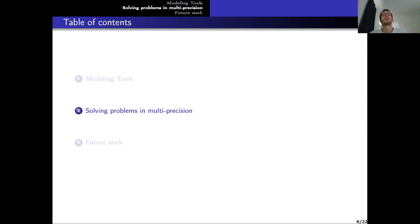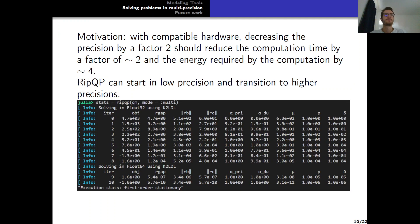Now I'm going to talk about the multi-precision features of RipQP. Our motivation is that with compatible hardware, decreasing the precision by a factor 2 should reduce the computation time by a factor of approximately 2, and the energy required by the computation by approximately 4. To this purpose, RipQP can start in a lower precision to reach some intermediate stopping criteria, and then when it needs some higher precision to get more accurate final results, it transitions to a higher precision.